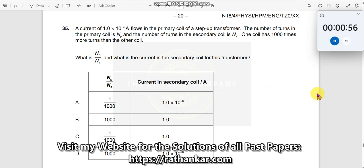A current of 1.0 × 10⁻³ ampere flows to the primary coil of a step-up transformer. This is your primary current and this is a step-up transformer.